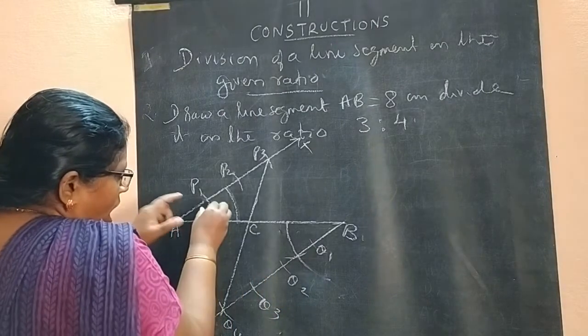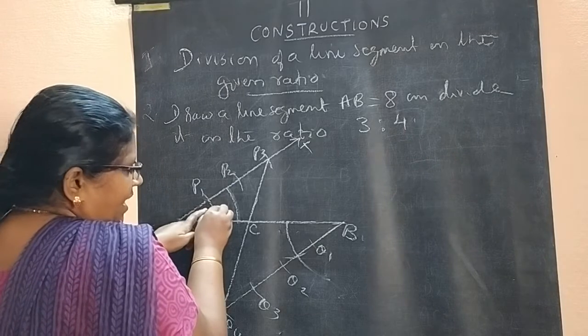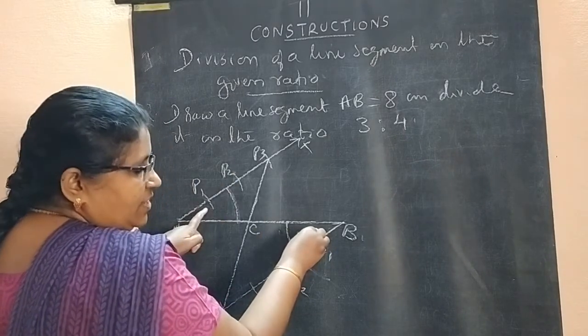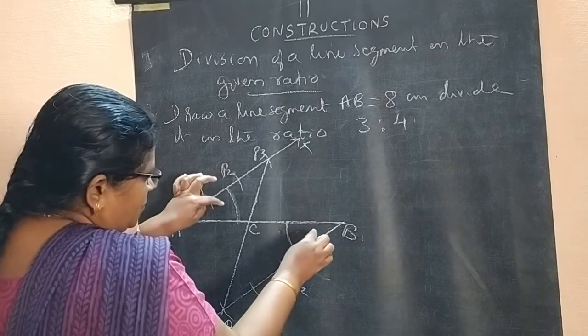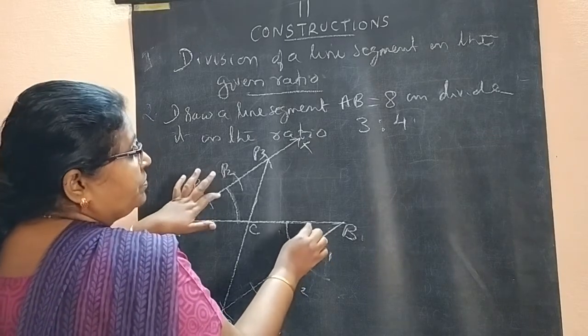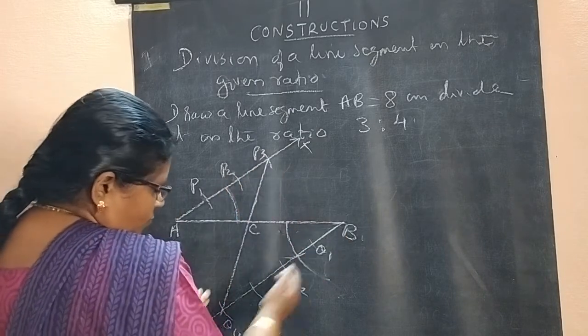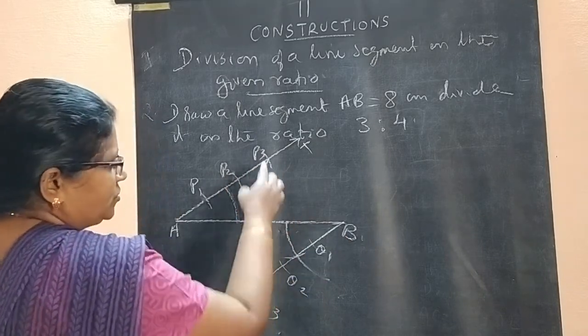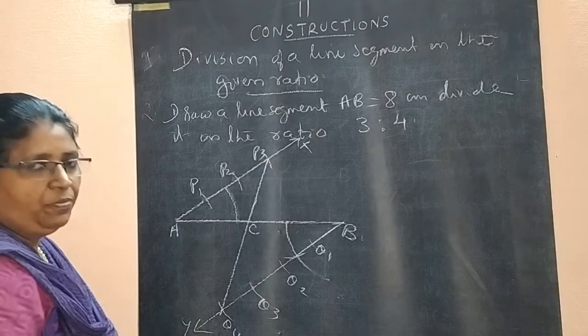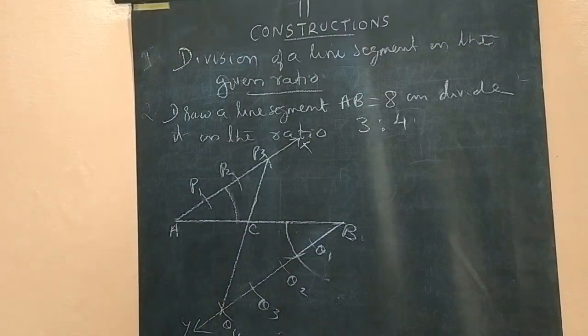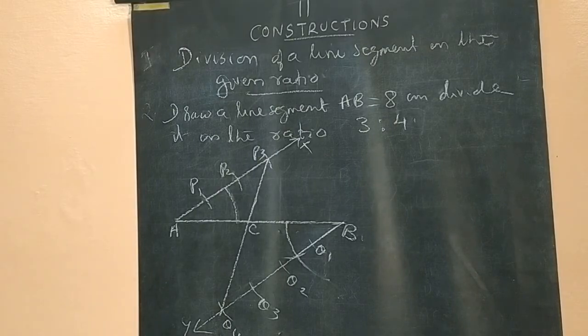The important thing is what angle you made here, the same angle you have to construct here. Otherwise, it is wrong. These both angles will be equal. This one make into 3 parts, this one make into 4 parts. Join 3rd part and 4th part. Then you will get the given line segment is divided in the ratio of 3 is to 4.